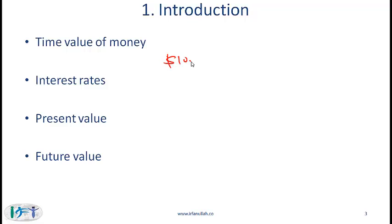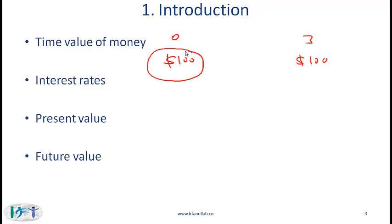If you have $100 today versus an option to receive $100 after 3 years — time 0 versus the end of 3 years — what would you prefer? Obviously you would prefer $100 today. Even though we have $100 in both cases, you prefer $100 today. This means that there has to be some value associated with time, because you are putting more value on the $100 that you are getting today relative to the $100 at a later point in time.